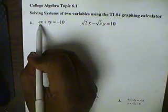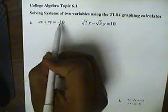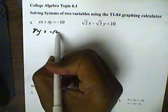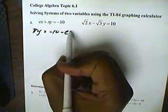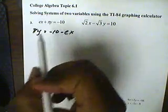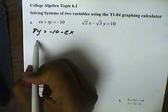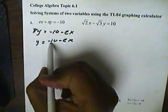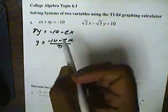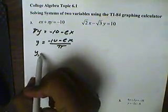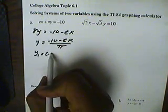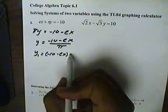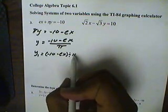So, let's send the ex to the other side, and we'll get πy equals negative 10 minus e times x. Then we'll divide both sides by π, and we'll get y equals negative 10 minus ex all over π. Now, when we put this into the calculator, we go to y1, and we put it in as open parentheses, negative 10, minus e times x, close parentheses, division, and then π.